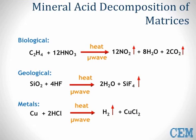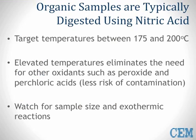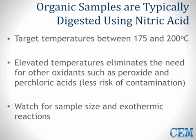When acids are heated in a microwave, they begin to break bonds, as shown in this diagram. The first reaction represents an organic reaction in which lots of carbon dioxide and nitrous oxide gases are released; vessels must be able to handle the production of these gases. The second and third reactions represent inorganic reactions which produce much less gas. Organic-based samples — those containing carbon, hydrogen, oxygen, and nitrogen — are typically digested in nitric acid alone at temperatures between 175 and 200 degrees Celsius. Since nitric acid is heated well above the boiling point, you can eliminate other oxidizing acids such as perchloric or hydrogen peroxide. The main concern is an exothermic reaction which generates a lot of gas quickly; sample size and the right method will help with this.